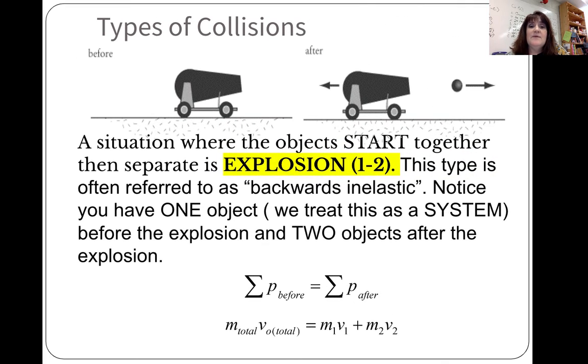The third type of collision is an explosion. A situation where the objects start off together and then separate is called an explosion. It is a one to two relationship. This type is often referred to as a backwards inelastic. Notice that you do have one object before. We treat this as the system. And then two objects after the explosion. So that means you have totals before, and most of the time that V naught will be zero, but not always. So be careful.